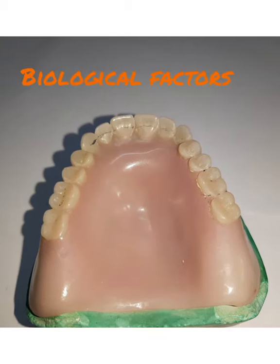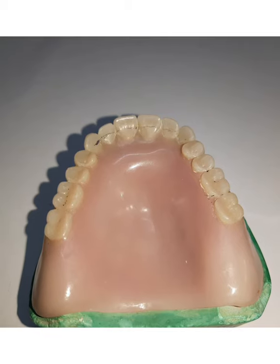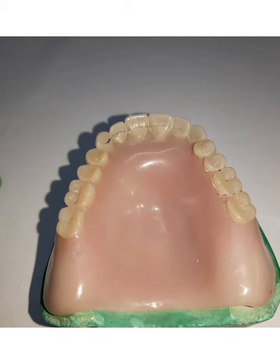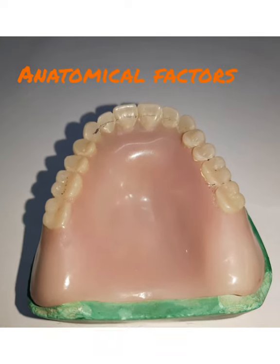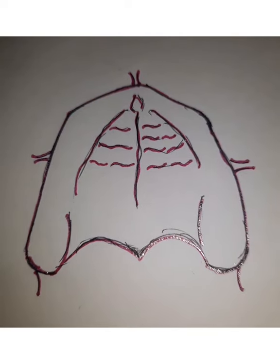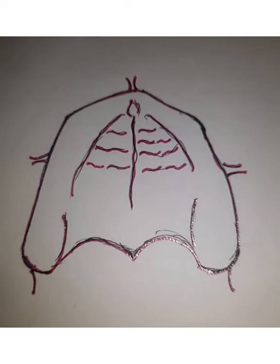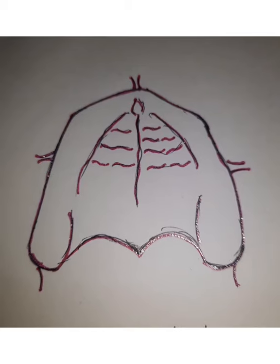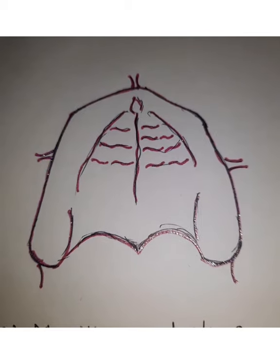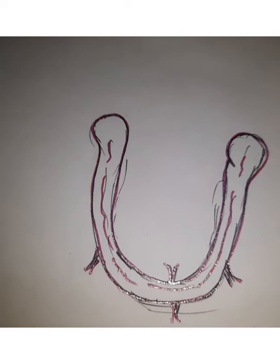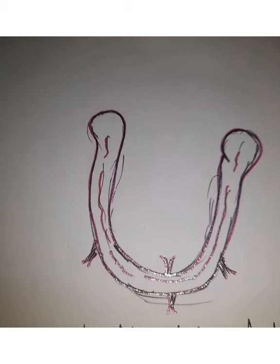Biological factors can be of three types: anatomical factors, physiological factors, and muscular factors. Under anatomical factors, you have basically the size of denture bearing areas. Greater the size of denture bearing area, greater will be the amount of retention in complete dentures. The maxillary arch has a greater denture bearing area of approximately 22.96 cm² whereas the lower denture is only 12.25 cm².